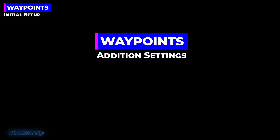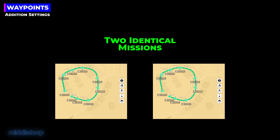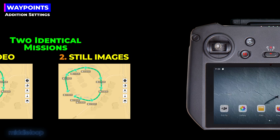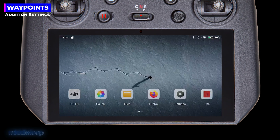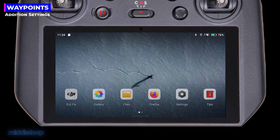To recap, at this point we now have two identical waypoint missions saved — so far, only the names are different. Now it's time to take each of those missions and alter them so that one will be used for video and the other for photos. This next part can be done off-site. In fact, you don't even need the drone to do it, just the controller.